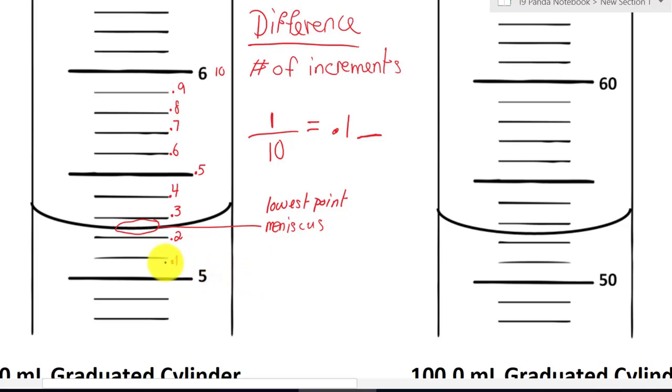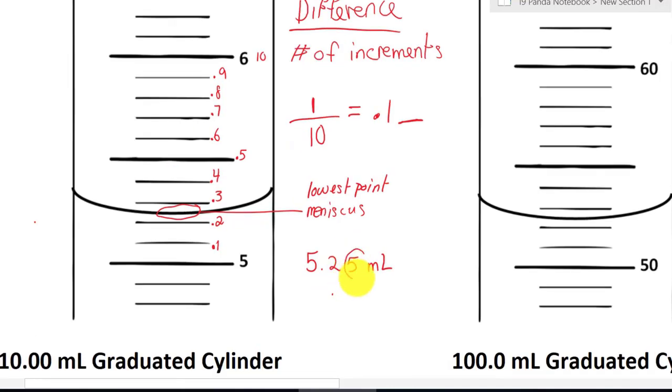So this lower point right here, which is called the meniscus, which is the lowest point. For sure we know it's going to be five point one, point two, but we know that meniscus did not pass point three. Five point two five. So for sure we know it's going to be five point two, but the last number, number five, we didn't know for sure. So we estimated.